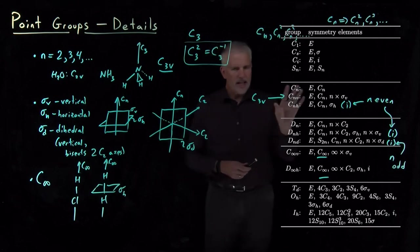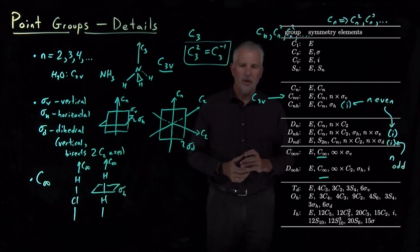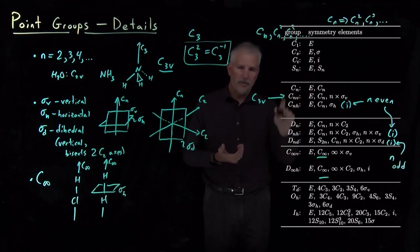Those are all the little asterisks and caveats and extra details required to understand the details of this table. But with all those extra details, now we're definitely able to, if we're given a molecule, find the symmetry elements, find them on this table and identify what the point group is.